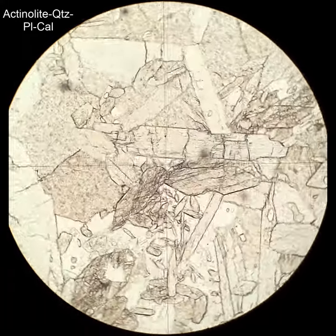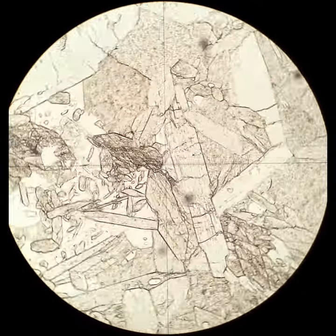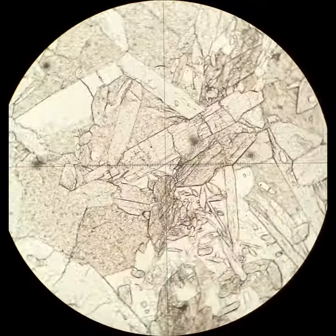Actinolite and tremolite are both calcic amphiboles, so if you see an end section, there's some end sections in this field of view, you'll see some diamond shapes, which are the 61-20 cleavage of amphiboles.